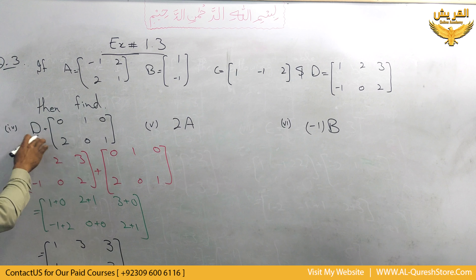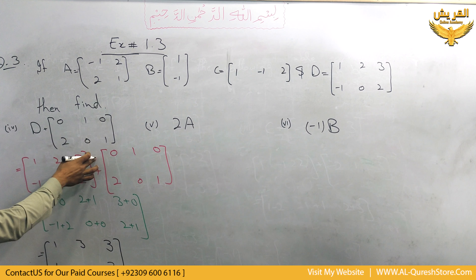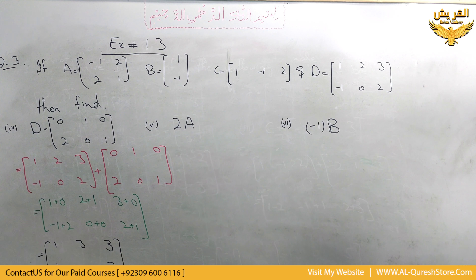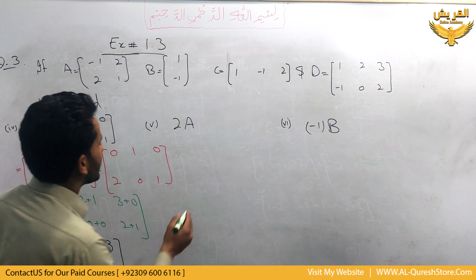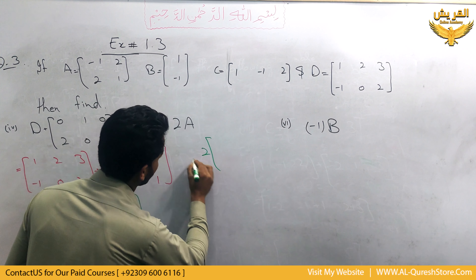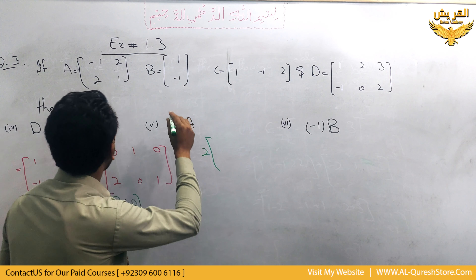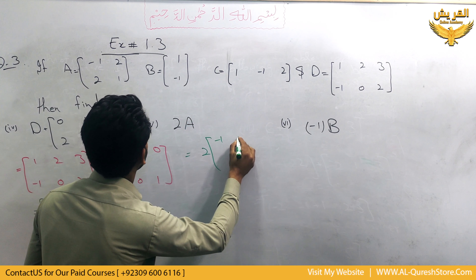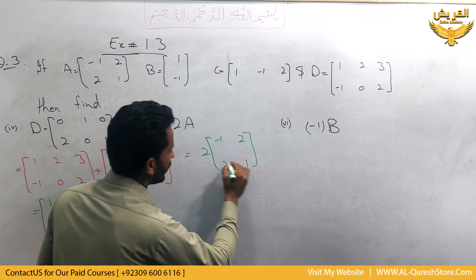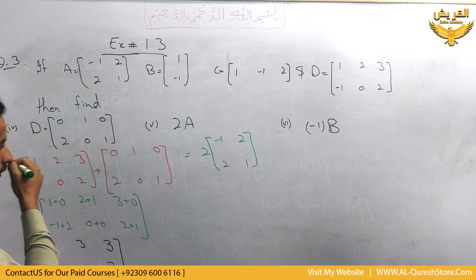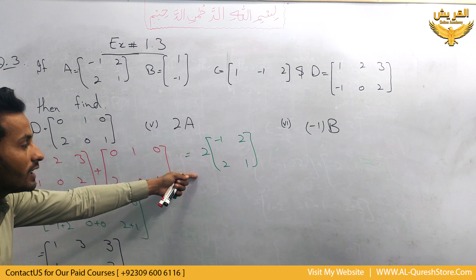Next, we use scalar multiplication with our matrix. We use a scalar number to multiply with matrix A. We use 2 to multiply it into matrix A: minus 1, 2, 2 and 1.